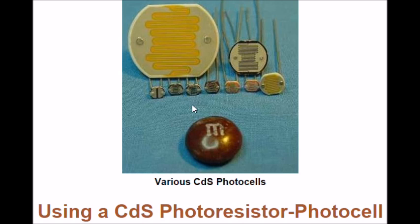Alright, in the picture up here above, you can see what some typical photocells look like. There are two wire devices. They merely change resistance based on light intensity. The brighter the light, the lower the resistance.